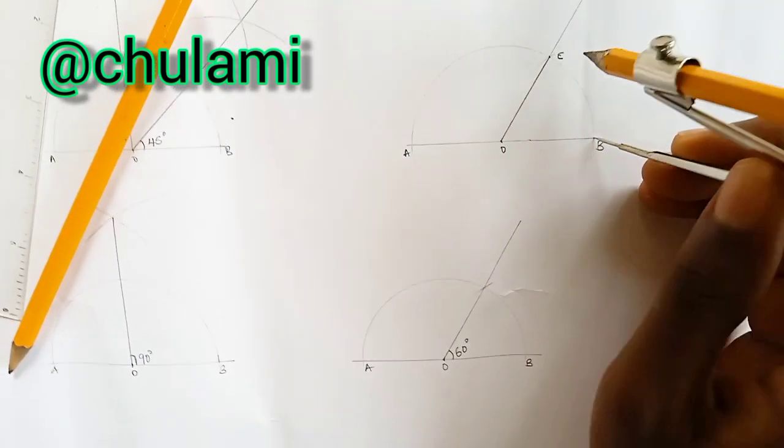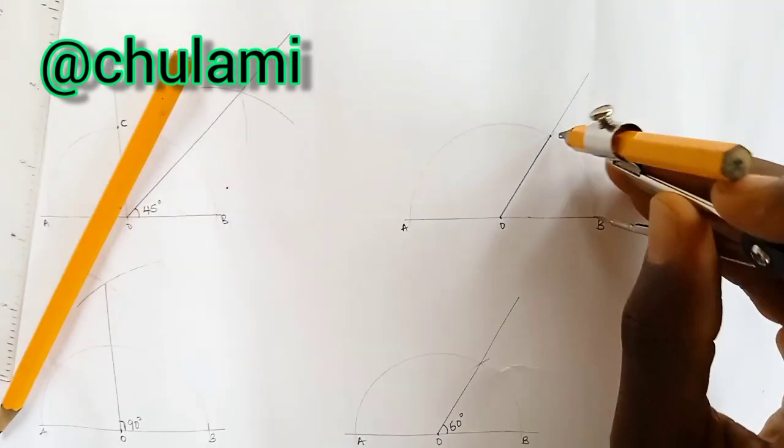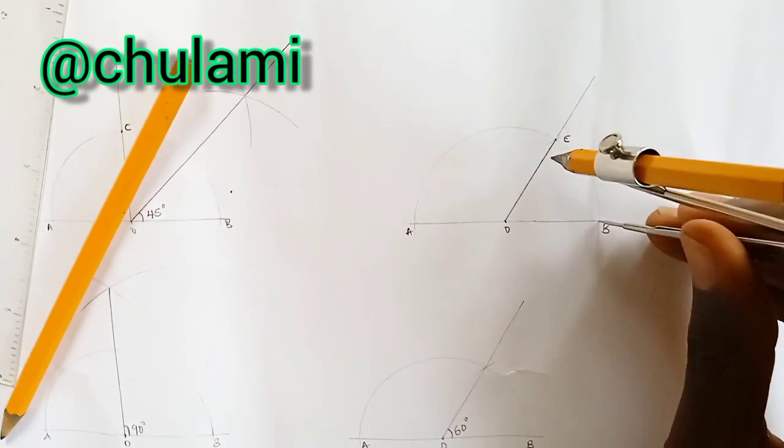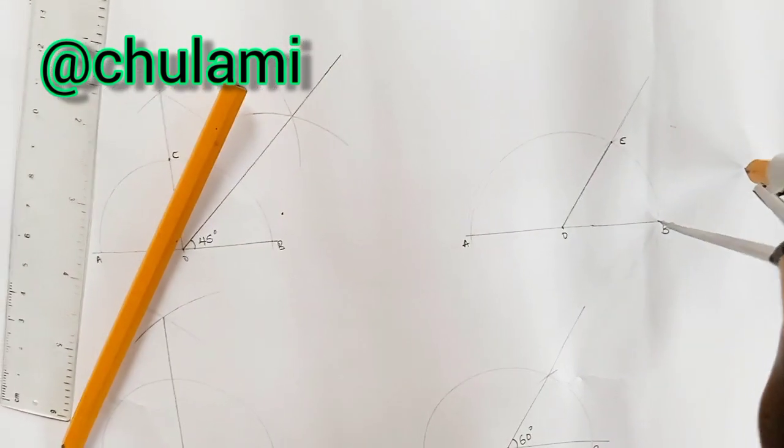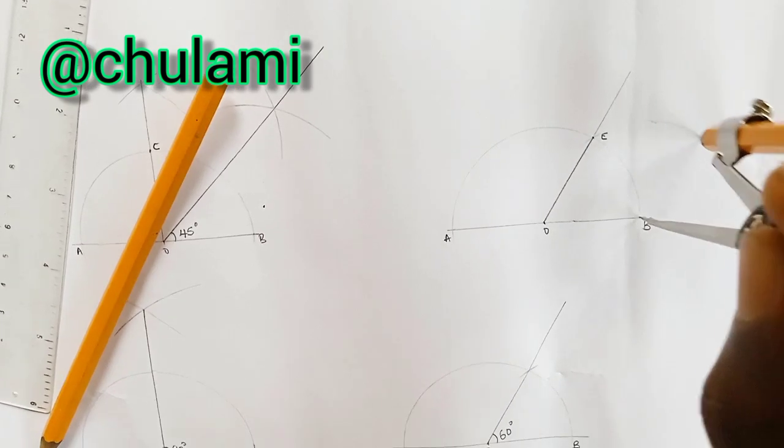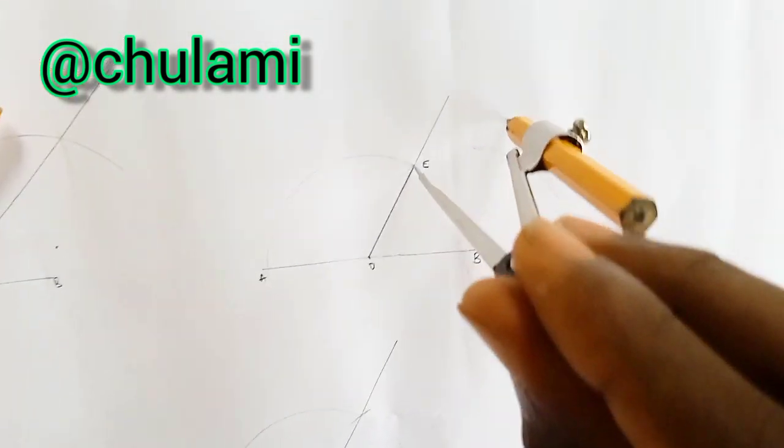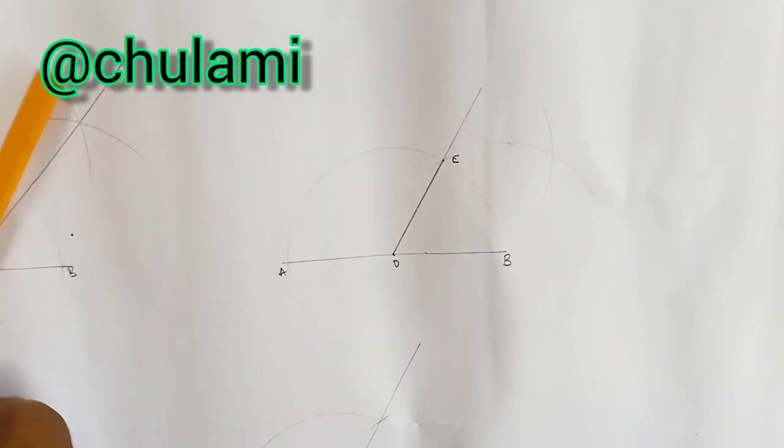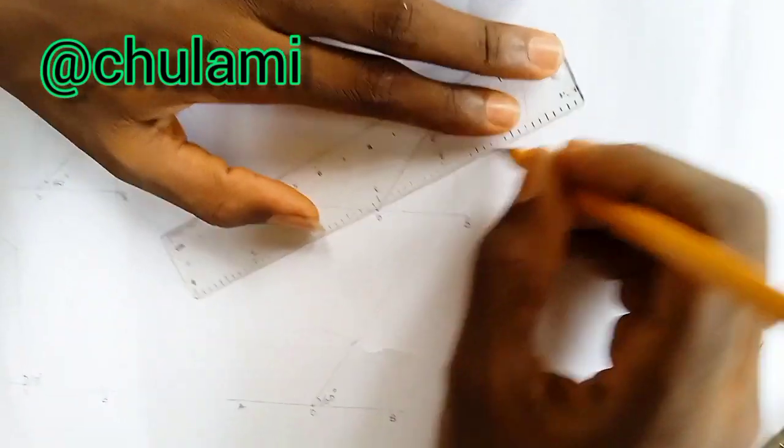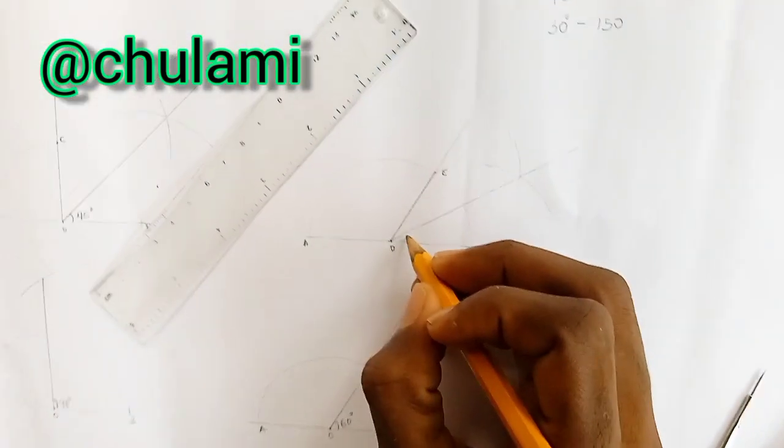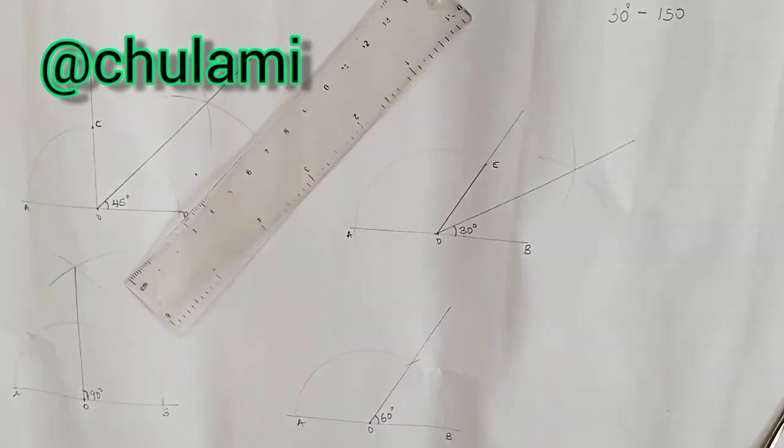This is the 60 degrees. Now to construct angle 30, you pivot here. Mind you, this and this are the same thing. You pivot here at B, elongate to C. And then you draw an arc up. Then you pivot at C and cut the arc. And then join. Now this gives you angle 30 degrees.